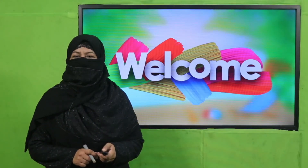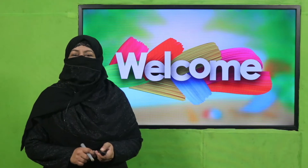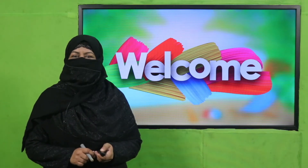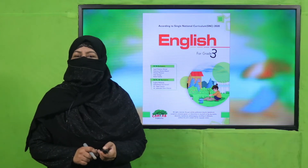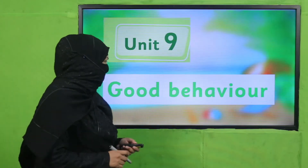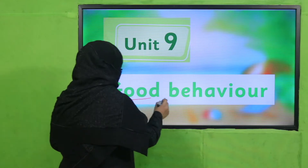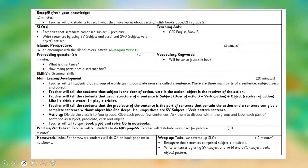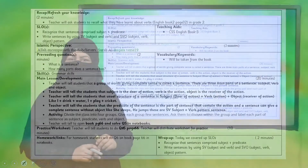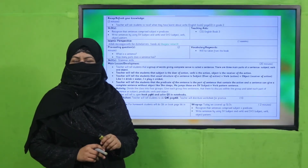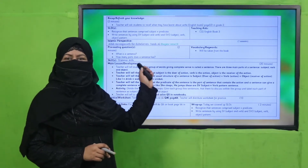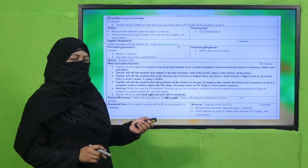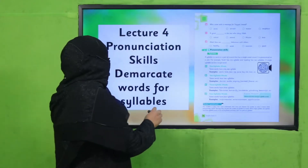Bismillahirrahmanirrahim, Assalamu Alaikum, my dear students. How are you? I hope you are enjoying the best of health. I welcome you to my class, English for Grade Three. We are learning Unit Nine, its title is 'Good Behavior.' My dear fellow teachers, this lesson plan, PowerPoint presentation, and worksheet links are given — you may click, download, and follow it as is or modify it for your convenience.